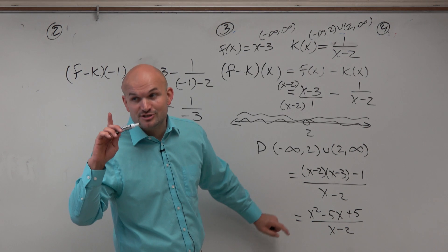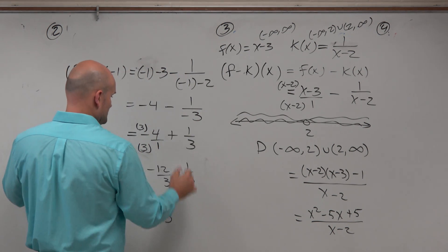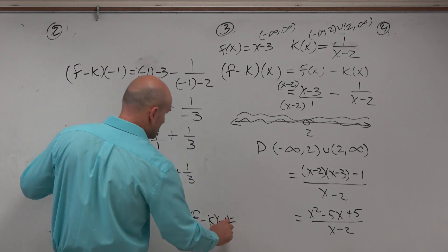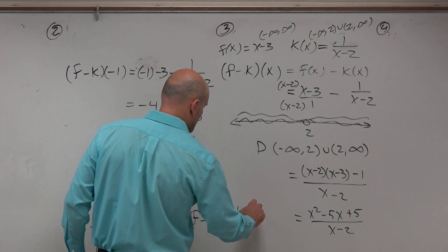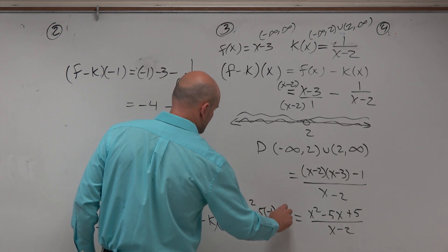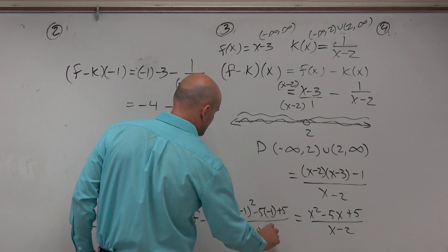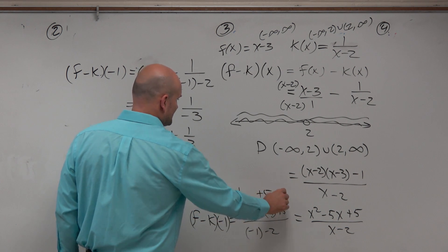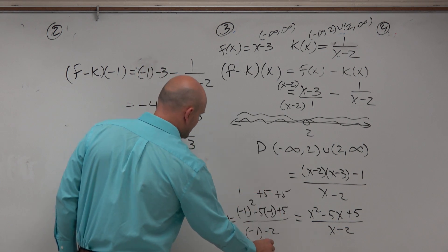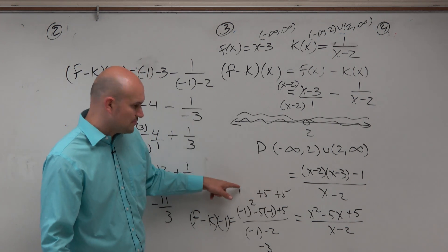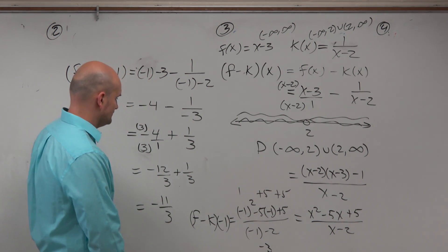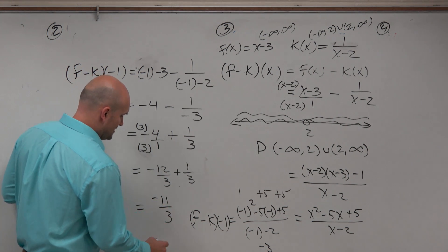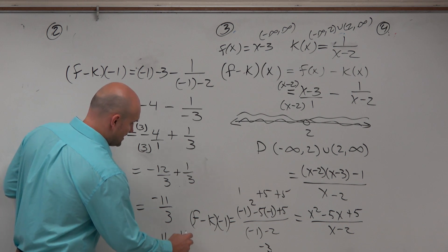Absolutely. You could also just plug in. If you did the math first — that turns into a positive 1, that turns into a positive 5. That's a negative 3. So 5 plus 5 is 10 plus 1 is 11. So it's 11 over negative 3. Because wouldn't you agree that negative 11 thirds is the same thing as 11 over negative 3?